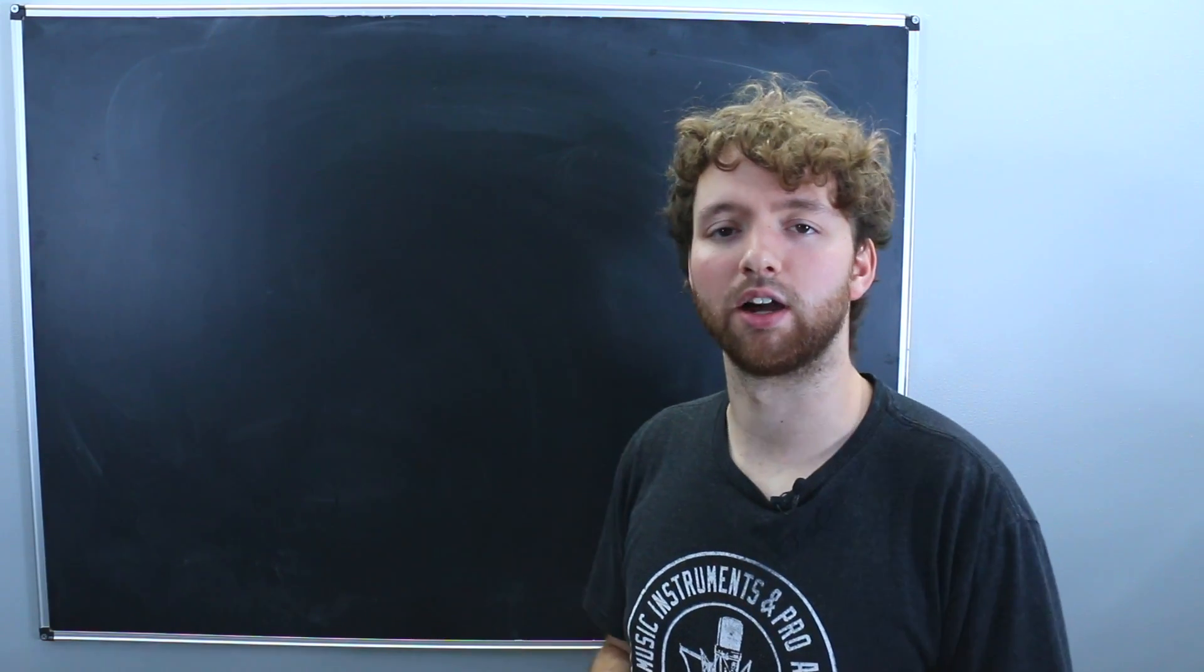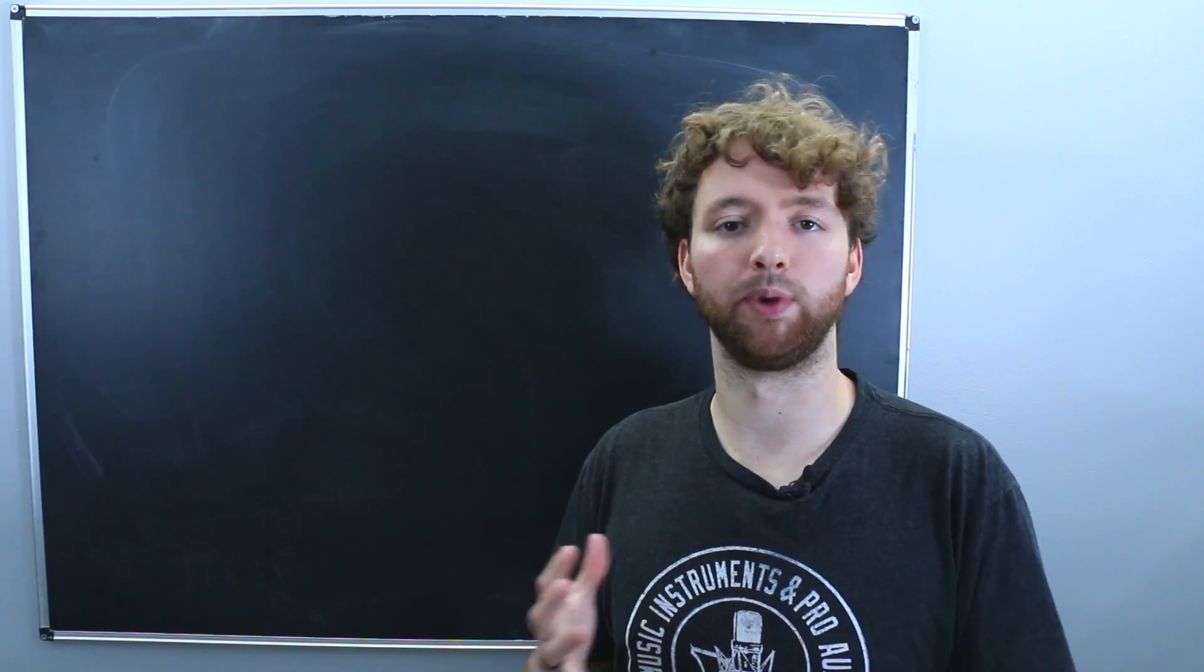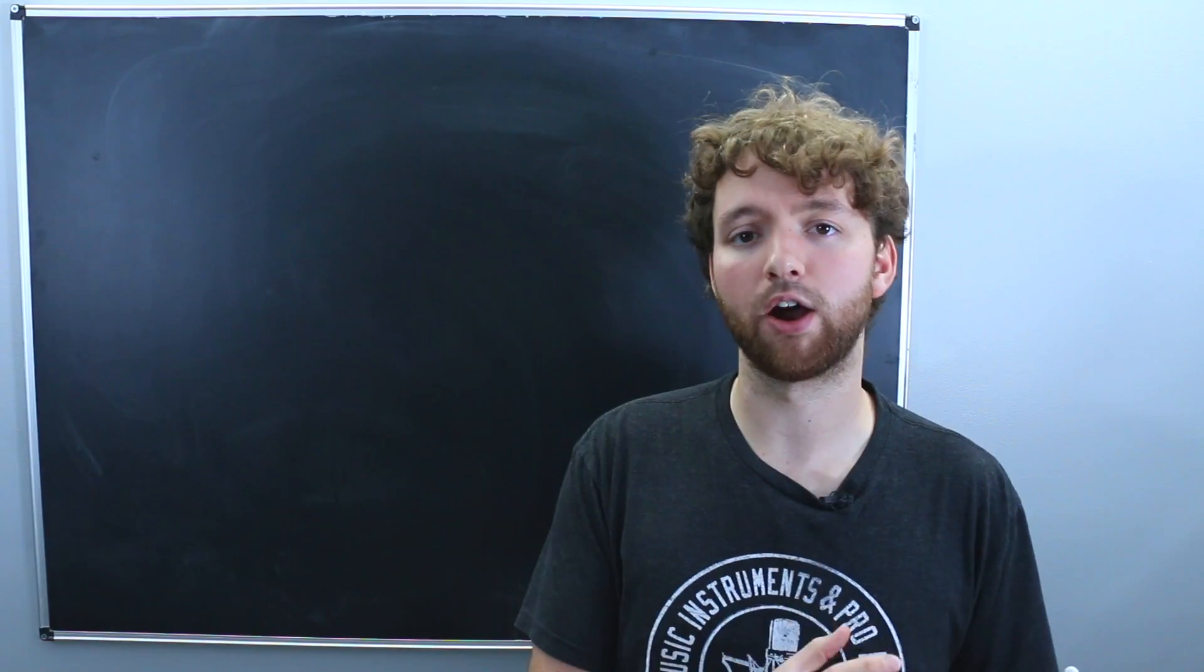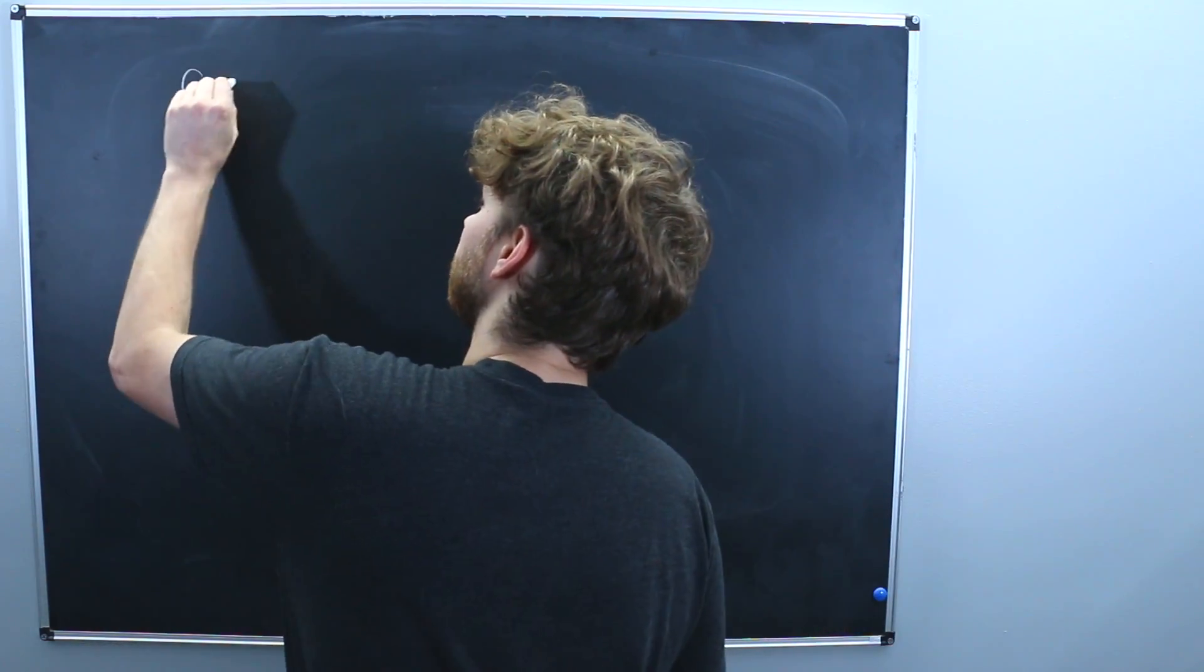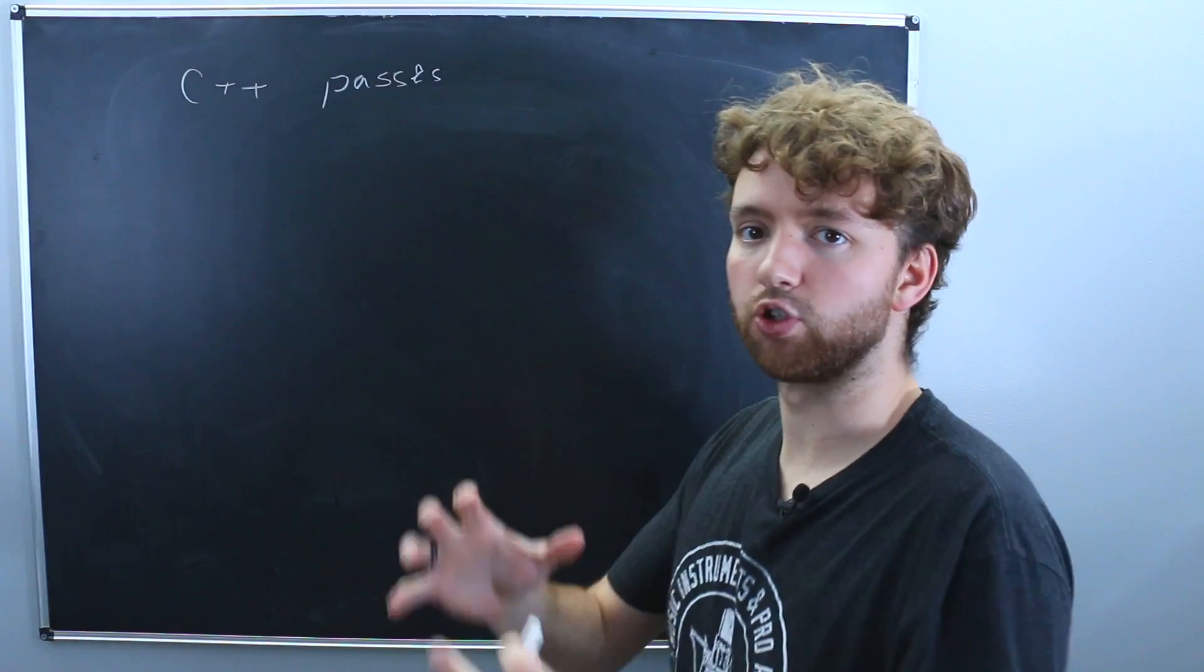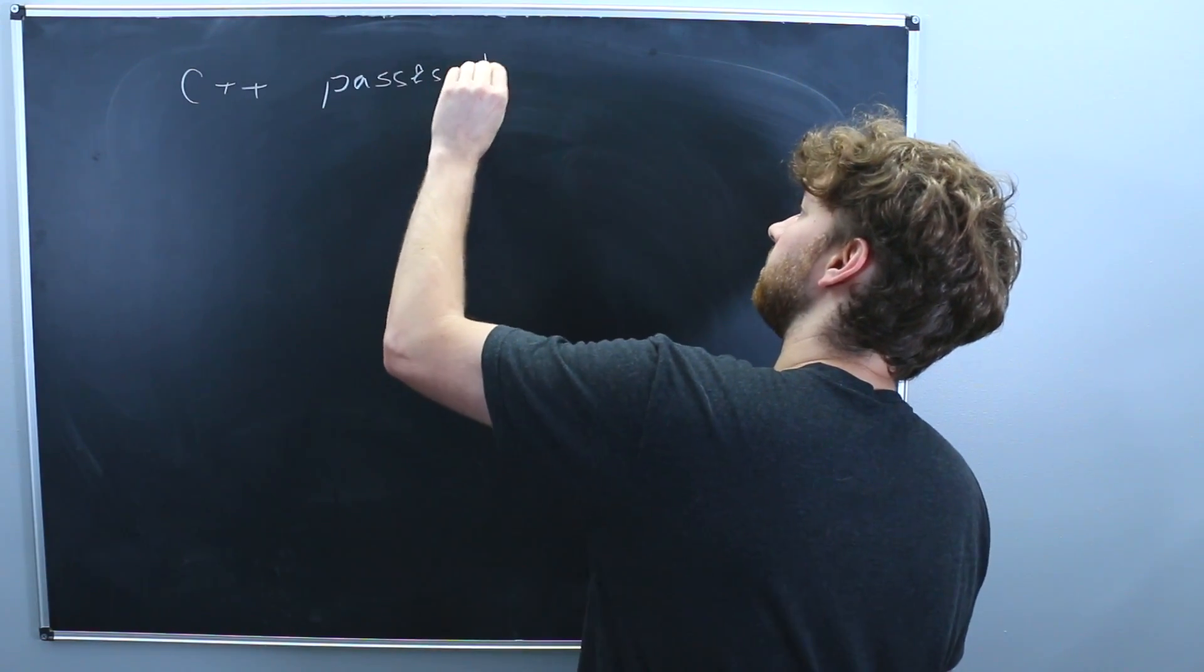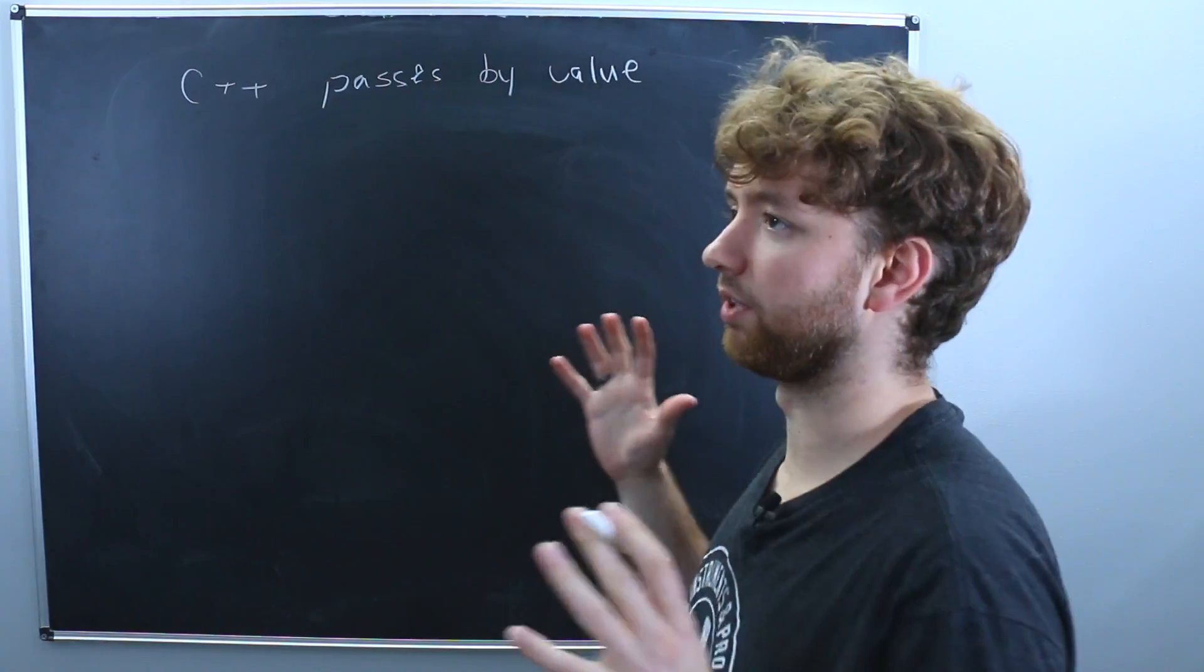So first, let's just talk about what C++ does by default and then how we can do the different variations. So this all has to deal with how arguments are passed to functions. And by default, C++ passes by value. So what that means is values are copied to the parameters.